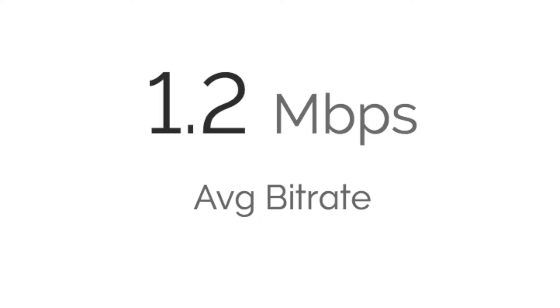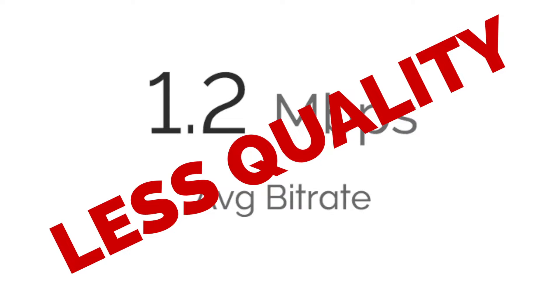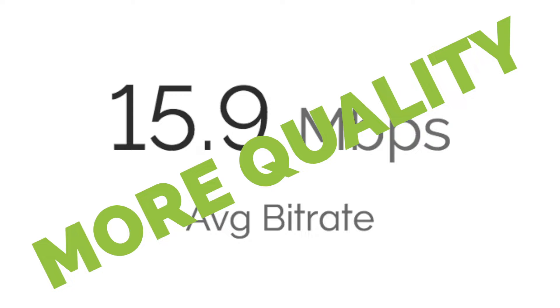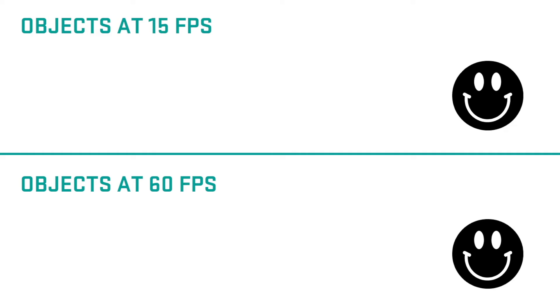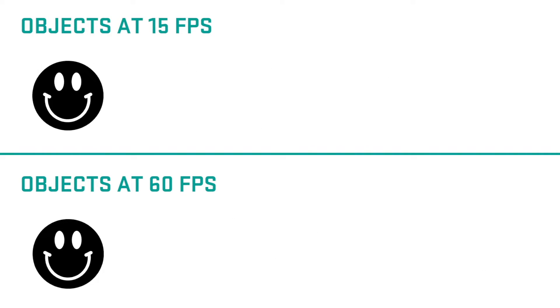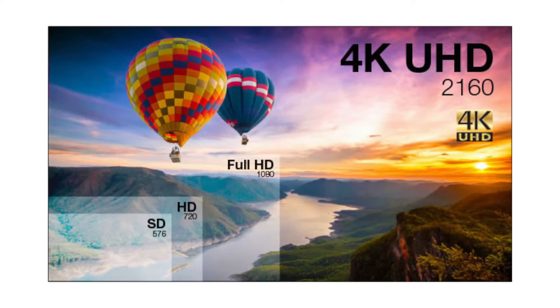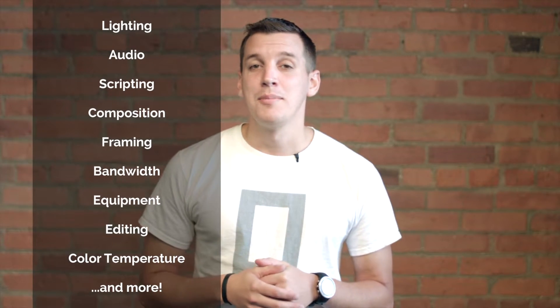So what does the bit rate tell you? Well, the lower the number next to the bit rate, the lower the quality of the video. The higher the number, the higher the quality. Let me clarify — this certainly isn't the only thing that will determine the quality of your video. The frame rate will determine how smooth the video looks, the resolution will determine how many pixels are in the video. There's lots of things that go into making a high quality video, but the bit rate still plays a big factor.